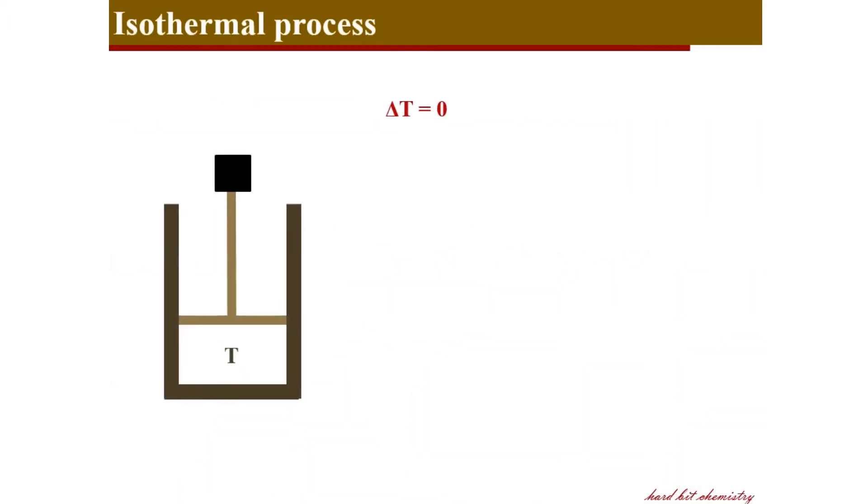An isothermal process is one which occurs at constant temperature. The change in temperature during the process is zero. Even though the system accepts a certain amount of heat from the surroundings, its temperature remains constant but it can do a certain amount of work. As the temperature is constant, we may say the internal energy change is zero or the internal energy remains constant, and hence enthalpy.